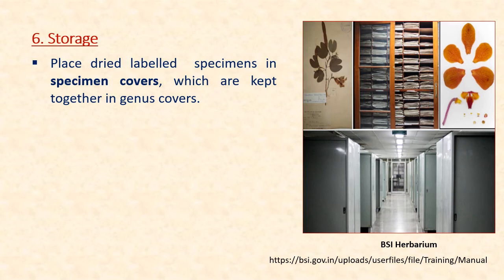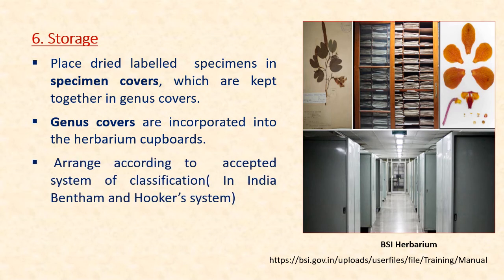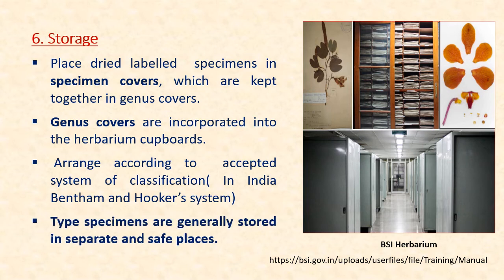The sixth step is storage. The dried, pressed and identified specimens are placed in a specimen cover, which are kept together in a genus cover. Genus covers are incorporated into the herbarium cupboards and are arranged according to a well-known system of classification. In India, the Bentham and Hooker system of classification is used for this purpose. Type specimens are generally stored in separate and safe places.